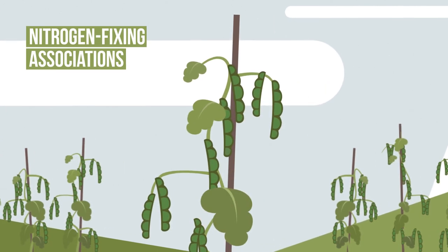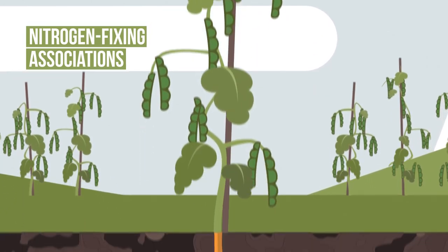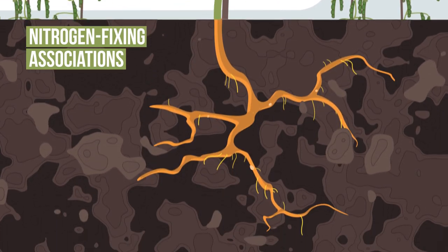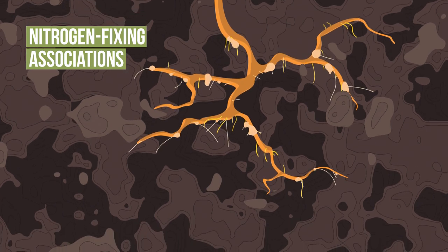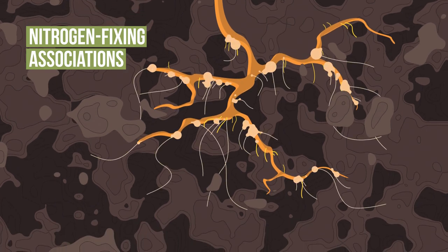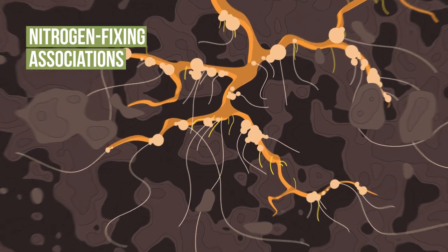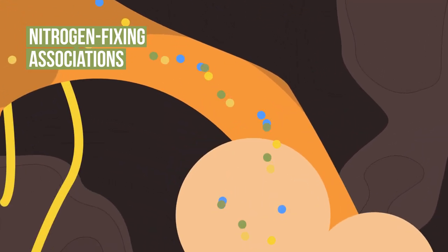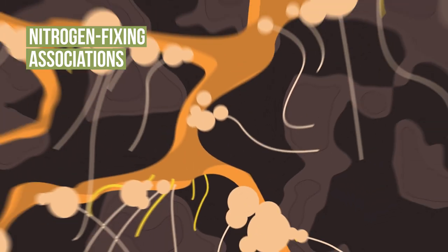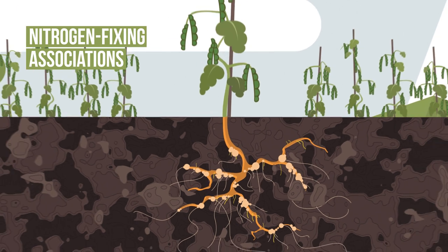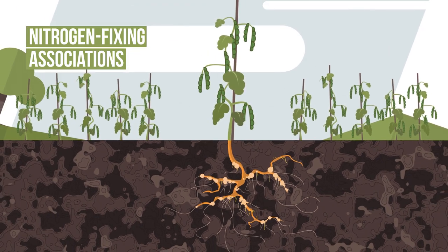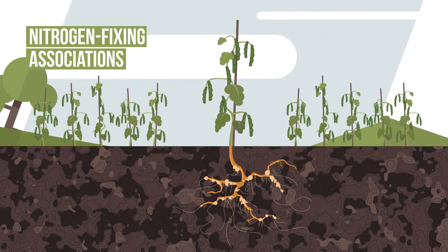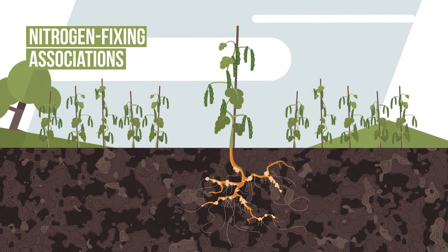Symbiotic nitrogen fixation occurs in very close association with roots of legumes. The bacteria are highly specific for each legume and they multiply in nodules that form on roots. The bacterial-plant association is very finely coordinated by molecular signalling. The bacteria differ in their effectiveness in fixing nitrogen. When used as inoculants, they are selected based on their ability to fix nitrogen and their ability to survive in the soil.